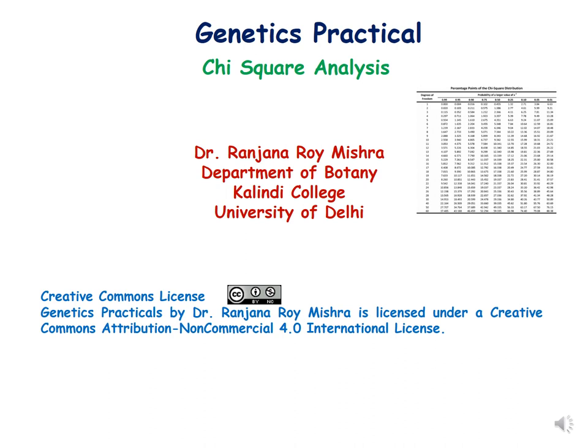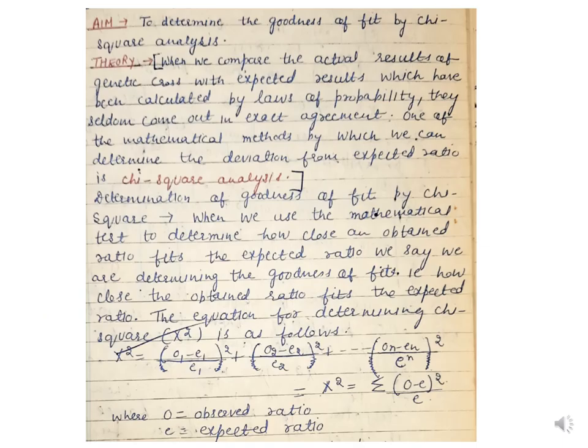Hello dear students, let us discuss chi-square analysis in this lecture. Chi-square analysis is also known as the goodness of fit test. This is a statistical test. When we compare the actual results of a genetic cross with the expected results calculated by laws of probability, they vary — sometimes they come out in exact agreement and sometimes they do not. One mathematical method to determine the deviation of the observed ratio from the expected ratio is called chi-square analysis, also known as the goodness of fit test.